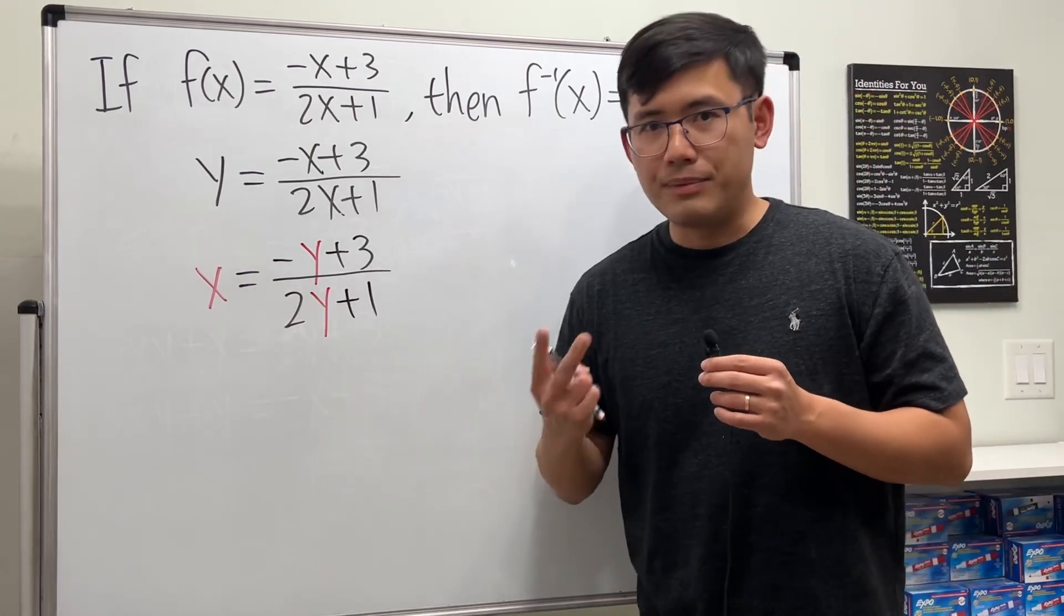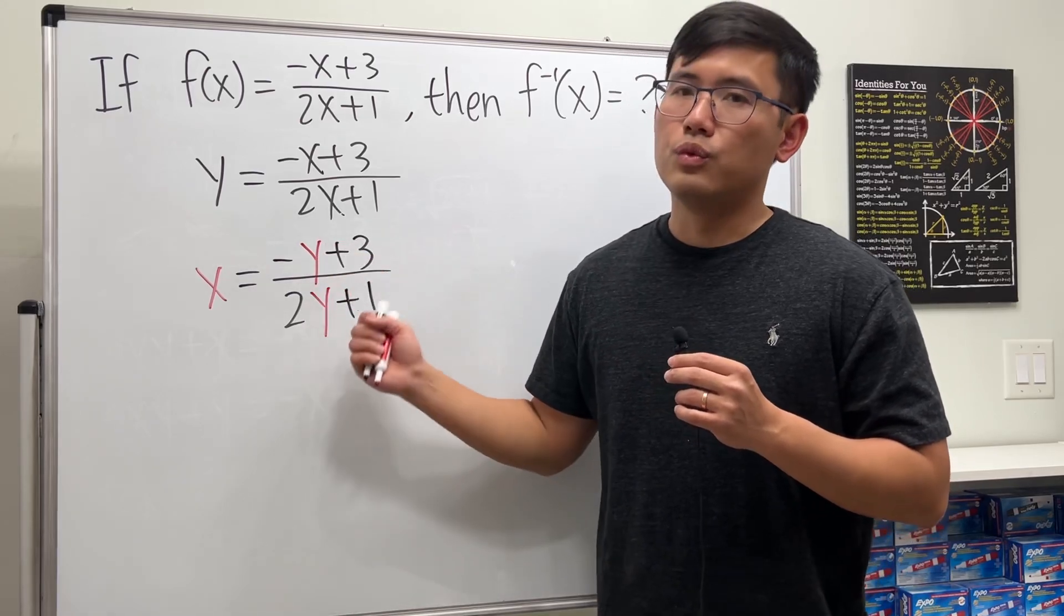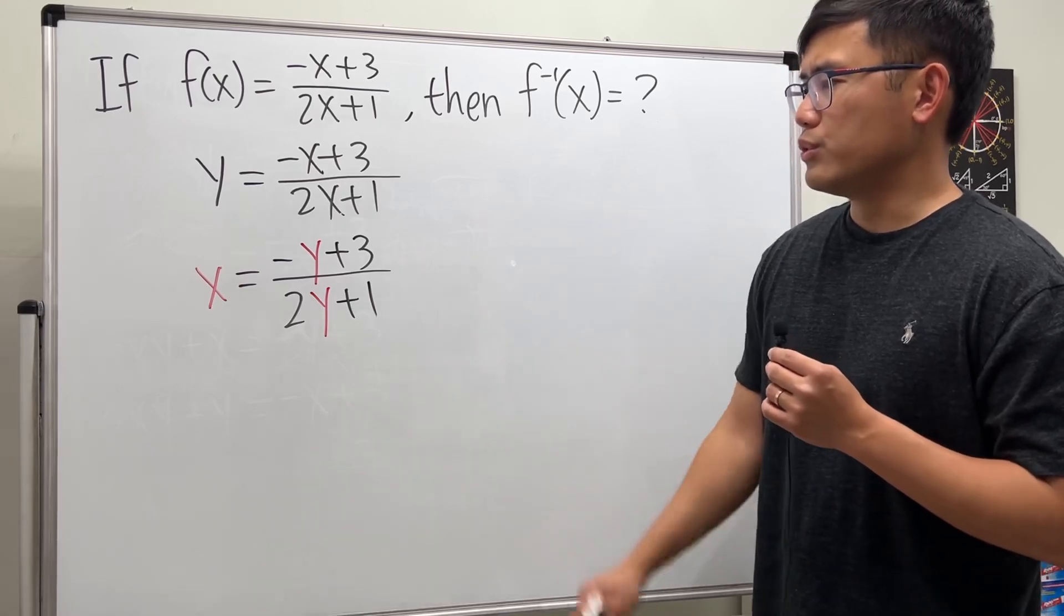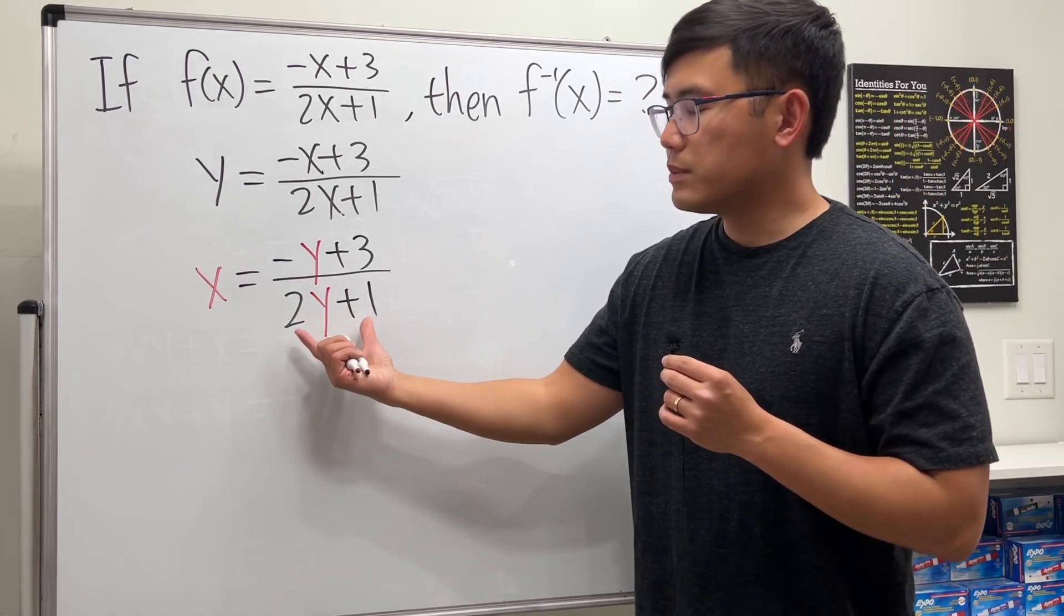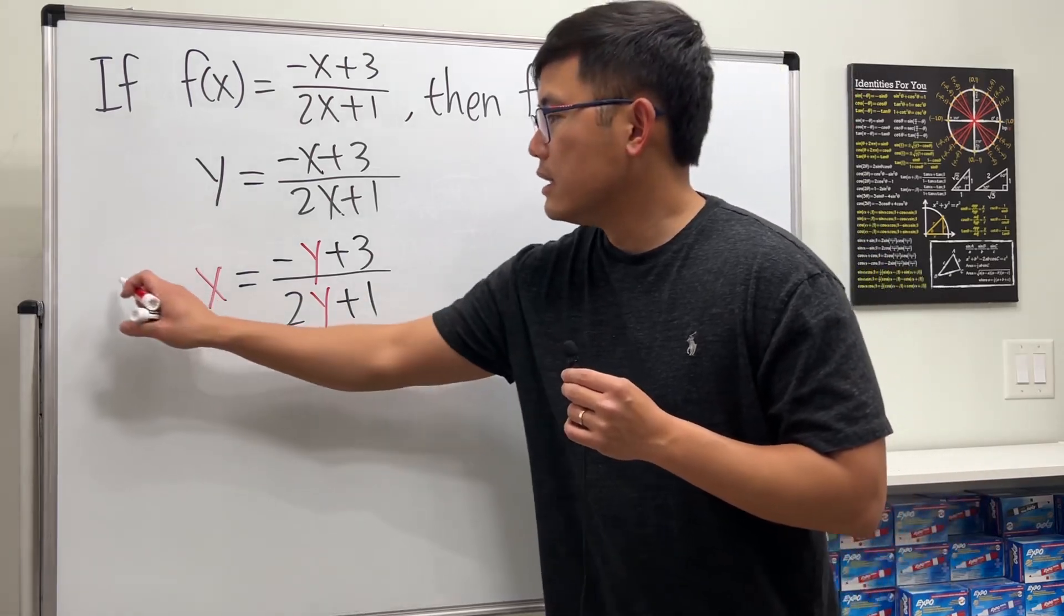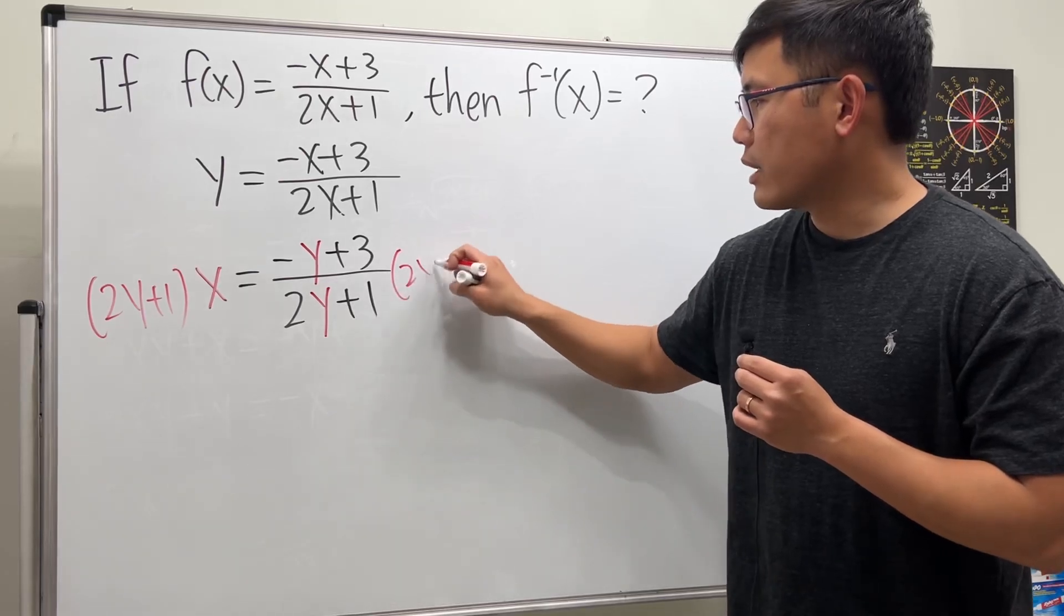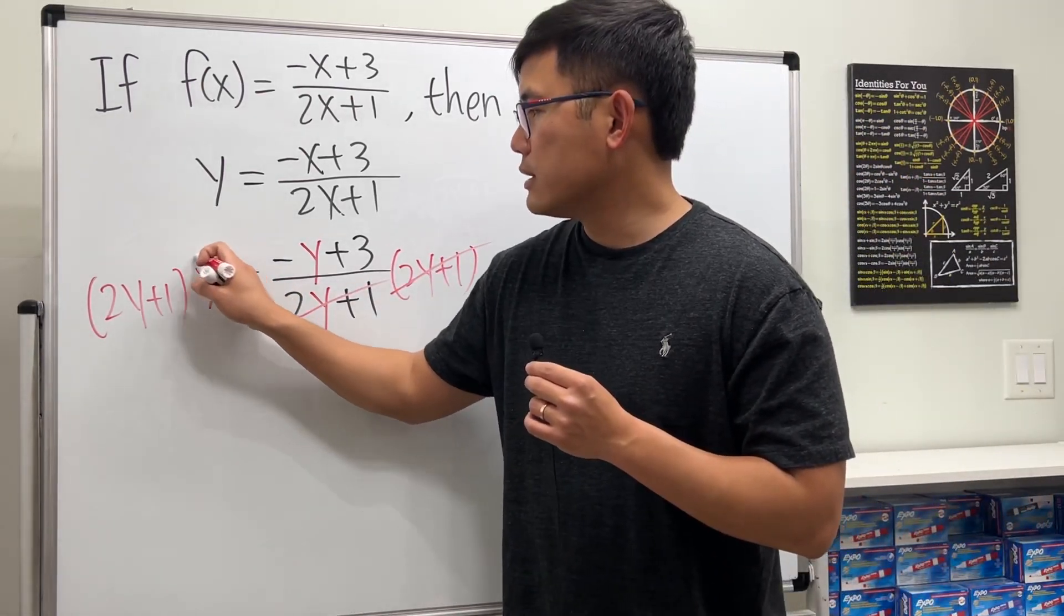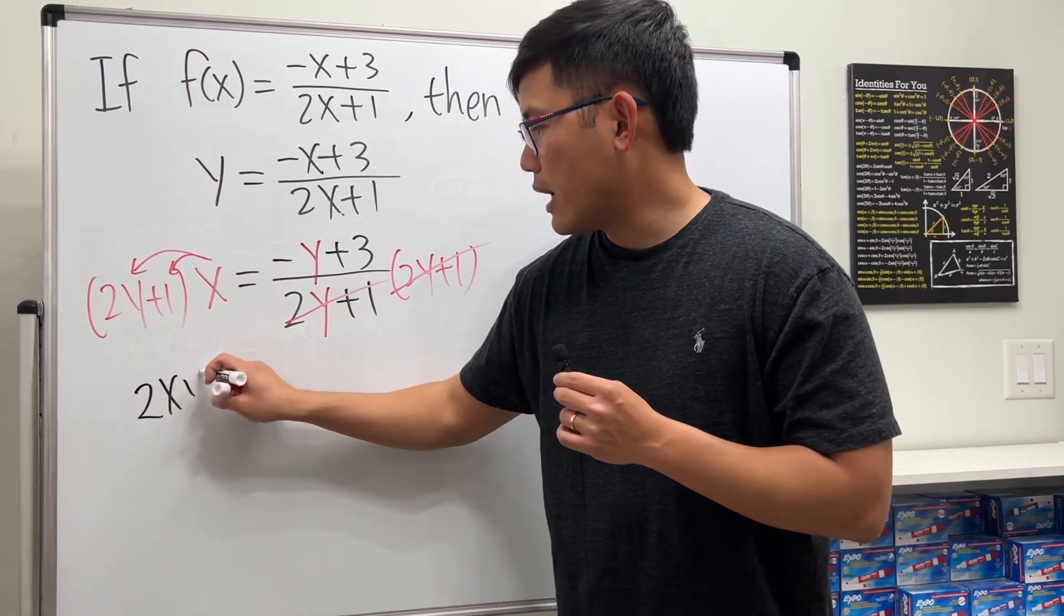Now step 3 is we are going to isolate this new y. This takes a few more algebra steps, but just do the usual thing. Here we have an equation with a fraction, so let's multiply the denominator on both sides. I will multiply 2y plus 1 on both sides. These cancel, and right here I will distribute the x. So here we get 2xy plus x equals negative y plus 3.